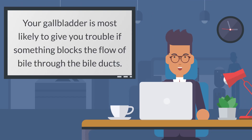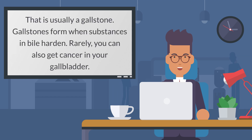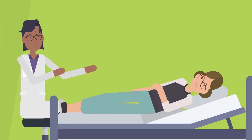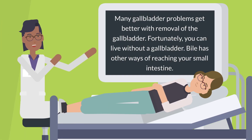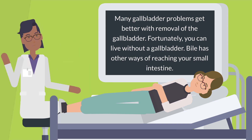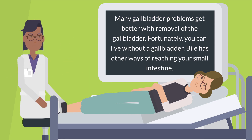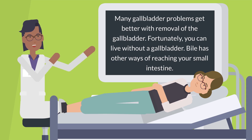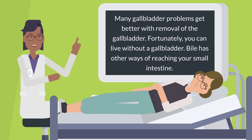Your gallbladder is most likely to give you trouble if something blocks the flow of bile through the bile ducts — that is usually a gallstone. Gallstones form when substances in bile harden. Rarely, you can also get cancer in your gallbladder. Many gallbladder problems get better with removal of the gallbladder. Fortunately, you can live without a gallbladder, as bile has other ways of reaching your small intestine.